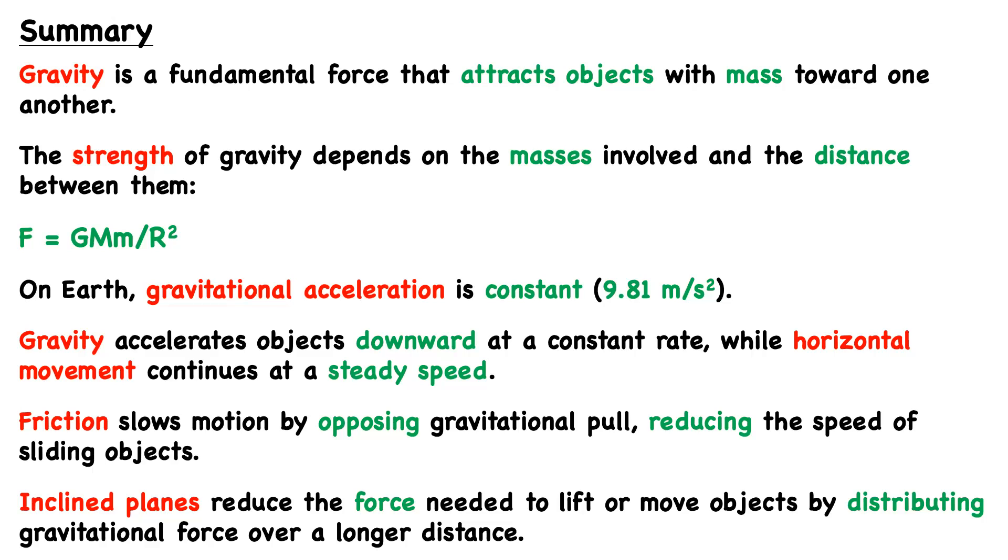On Earth, the gravitational acceleration is constant, and it's equal to 9.81 meters per second squared. Gravity accelerates objects downward at a constant rate, and that constant rate is 9.81 meters per second squared on Earth.